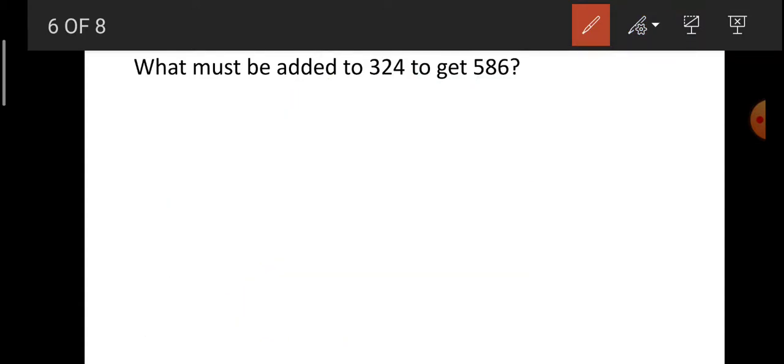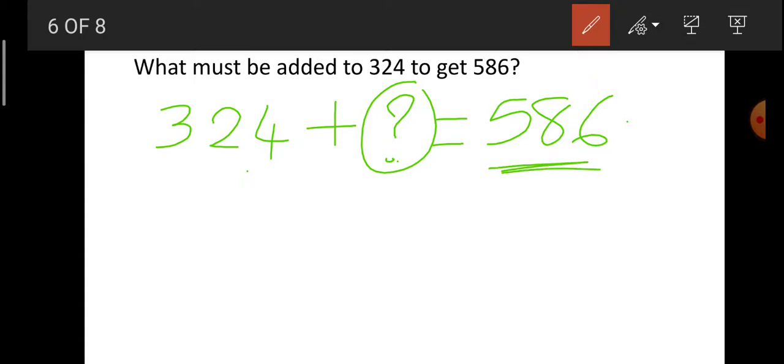I think you have understood this. Now I will tell you the answer of this sum. What must be added to 324 to get 586? See here, what is the meaning of that? 324 plus what number if you add, you will get the answer as 586. 324 को कौन सा number add करे तो 586 answer जैसे आता. Just now I told you one example.